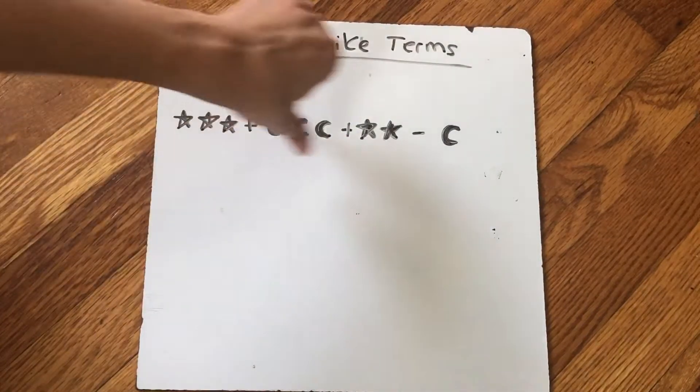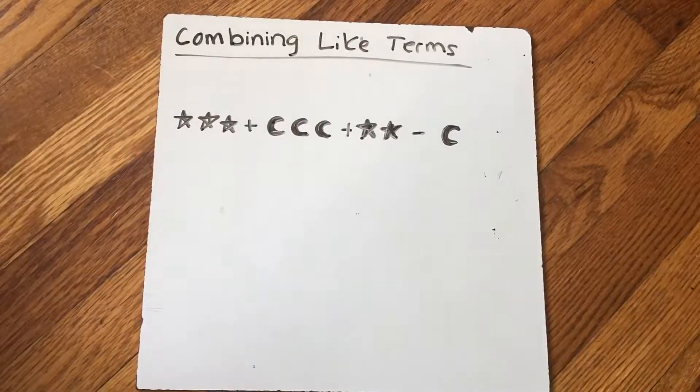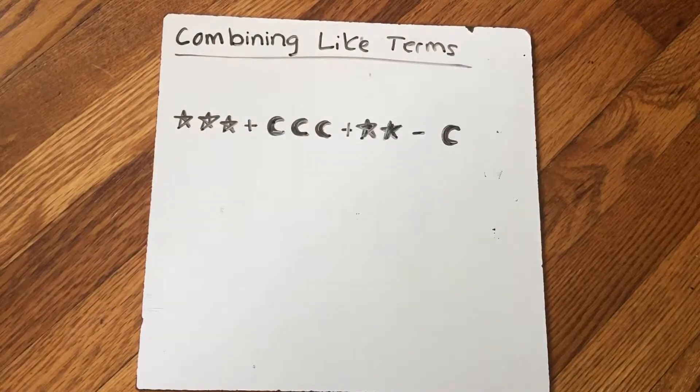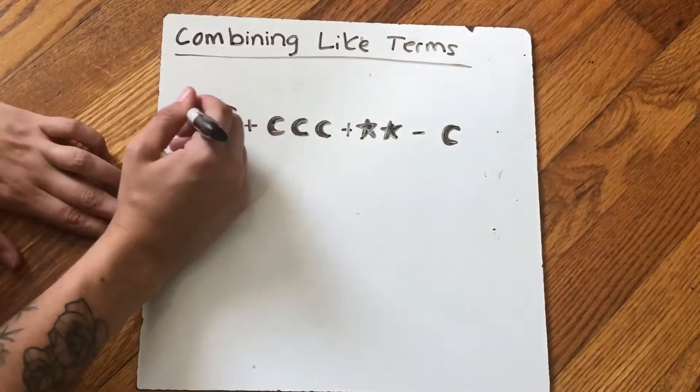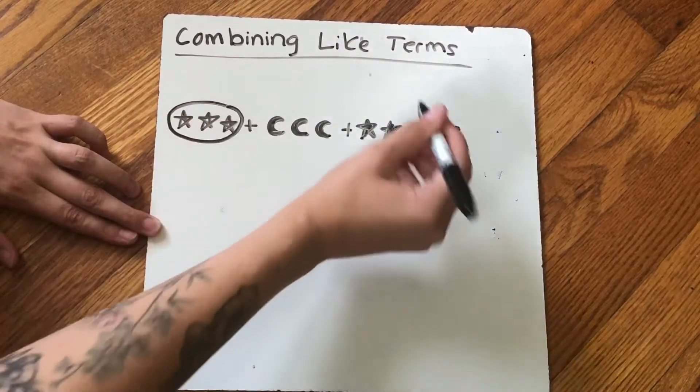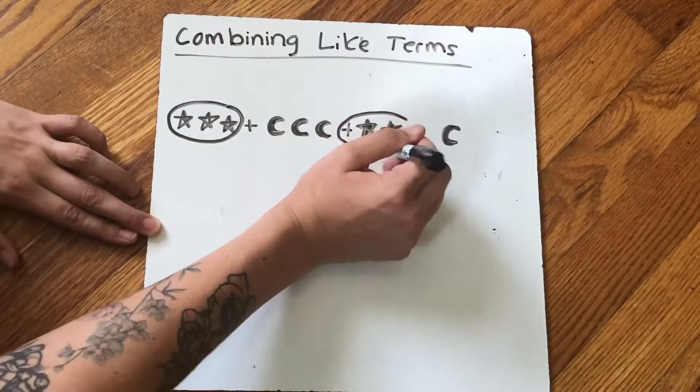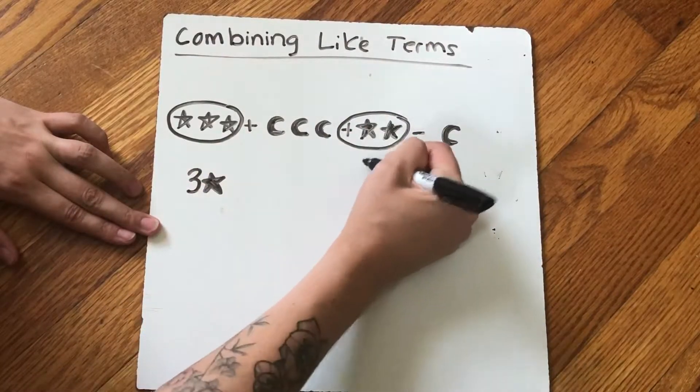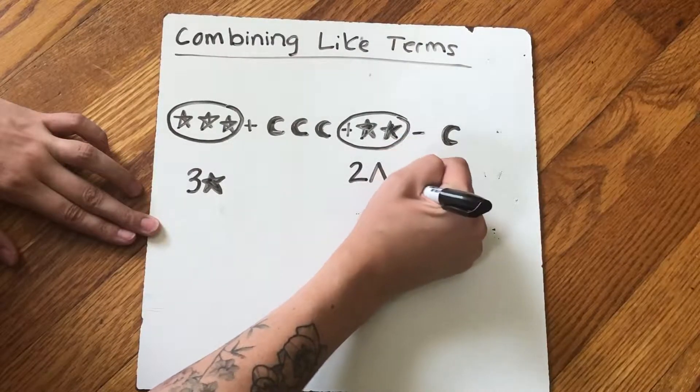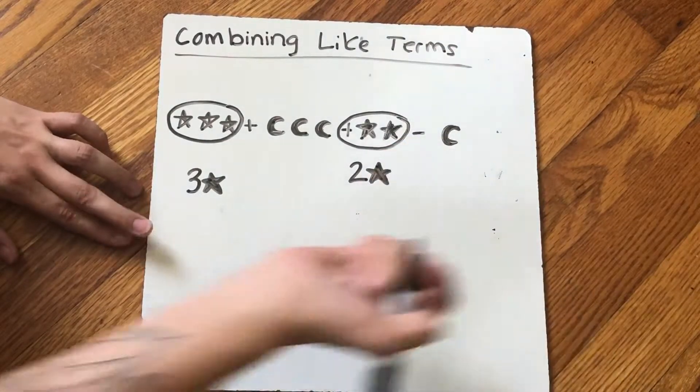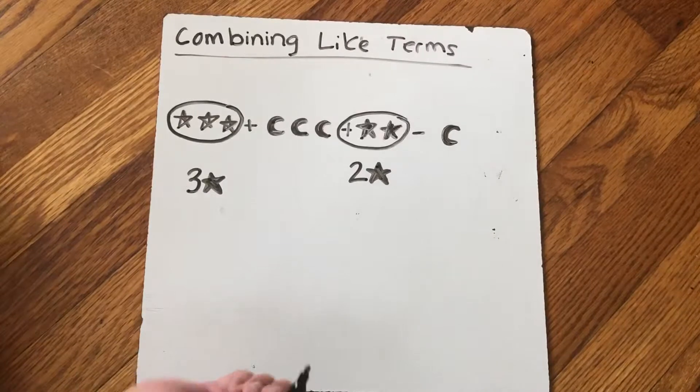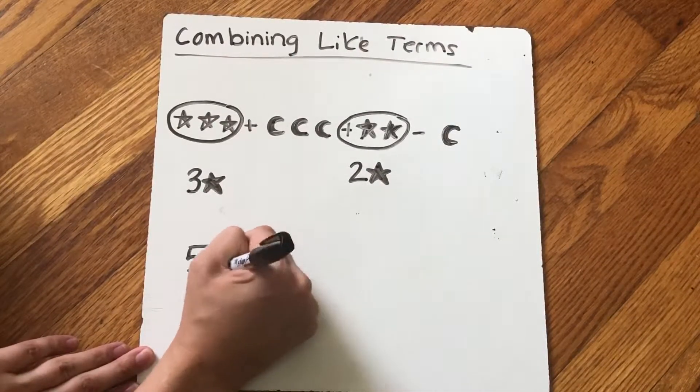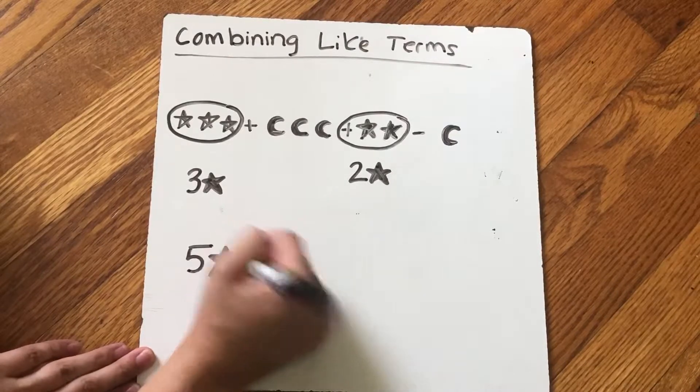Instead of writing this really long problem, I can combine them together and make a shorter, more simple problem. So what I'm going to do is I'm going to circle my stars. So I have three stars and two stars. And if I combine them together, that makes five stars.